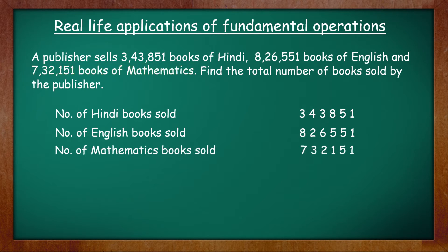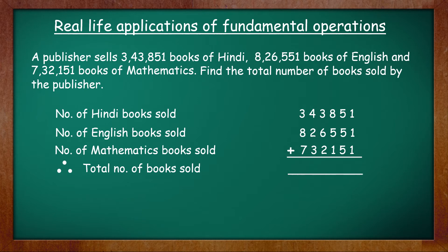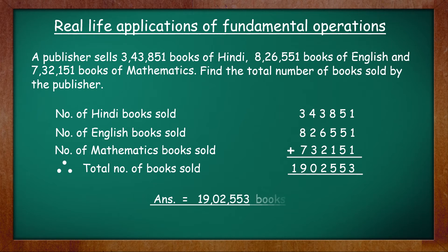Before we add to get the answer, we have to write the final statement: therefore, total number of books sold. Now put the plus sign and add the three numbers. The sum is 19,02,553. Write the answer at the end, and remember when you write the answer, you must not forget to insert the commas and write the unit. The answer is 19,02,553 books.